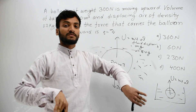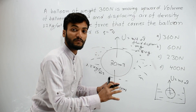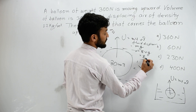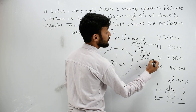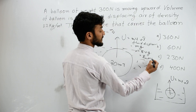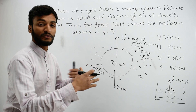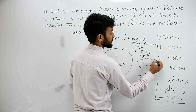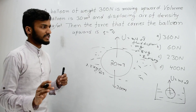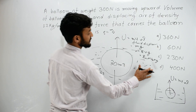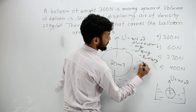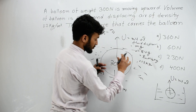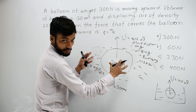The volume of fluid displaced is equal to the volume of the balloon, which is 30 m³. The density of air is 1.2 kg per meter cubed. So the buoyant force equals 1.2 times 30 times g.